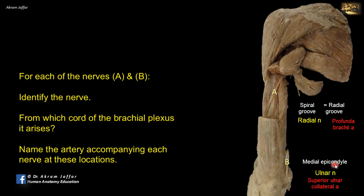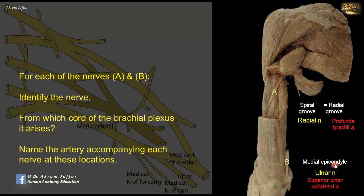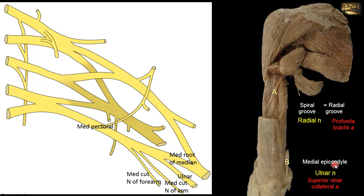The ulnar nerve is derived from the medial cord of the brachial plexus, which has five branches. Apart from the ulnar nerve, all other four branches of the medial cord are named medial: the medial pectoral nerve, the medial root of the median nerve, the medial cutaneous nerve of the arm, and the medial cutaneous nerve of the forearm.